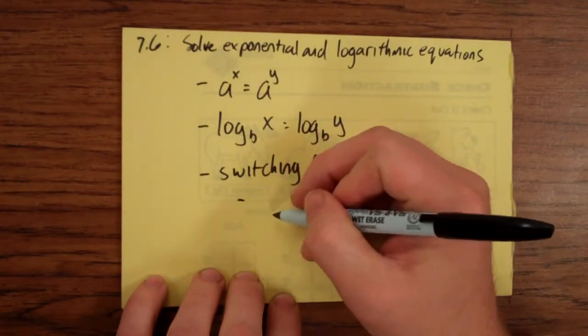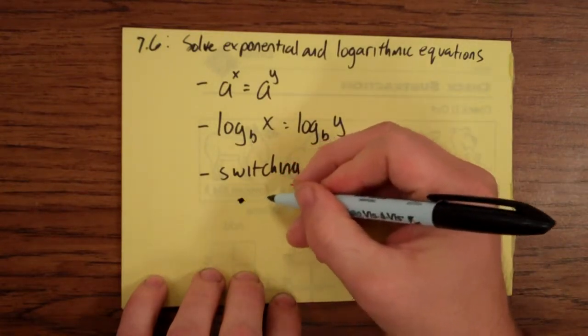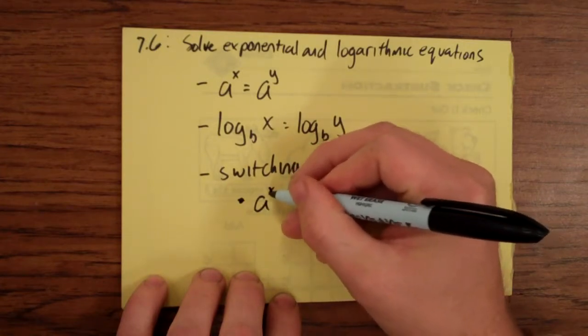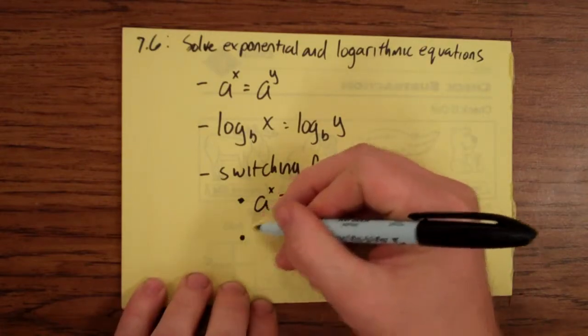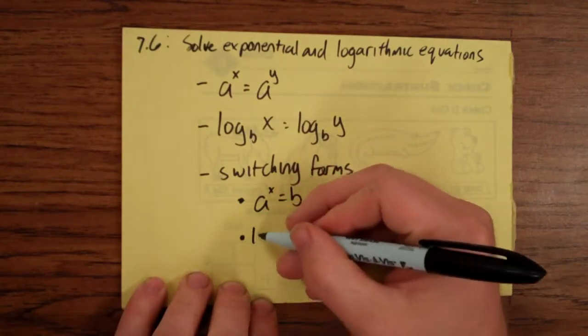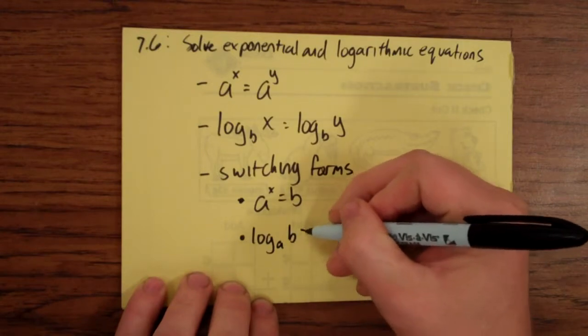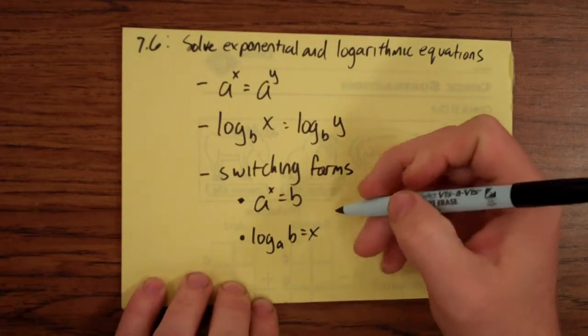So, one type of equation that I might see would be a to the x equals b. I would take this kind of equation and I would say log base a of b equals x.